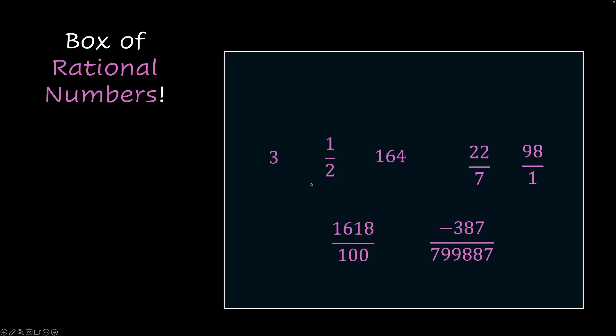Now, here's another box for you. This is a box of rational numbers. What I mean by that is any rational number that you could think of would be inside this box. It could be 3, it could be 1 over 2, it could be 164, 22 by 7, which is a rational number, 98 over 1, or any other number which is of the form P by Q where Q is not equal to 0 and P and Q are integers will be inside this box.